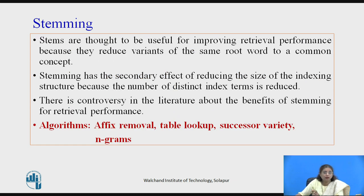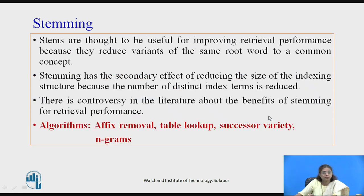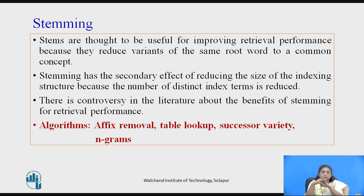Stems are useful for improving retrieval performance because they reduce variants of the same root. Otherwise, the same document may store four or five words; instead, after stemming, one word represents all five. This saves space and reduces the size of the indexing structure since the number of index terms is reduced. However, there is controversy in the literature about the benefits of stemming. There are many algorithms available: affix removal, table lookup, successor variety, n-grams, and so on.